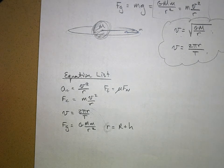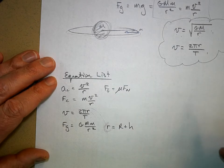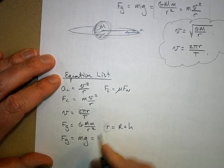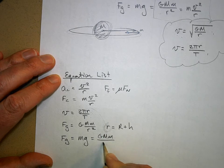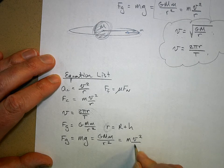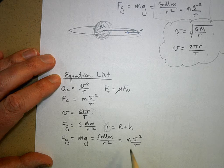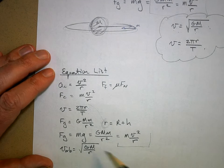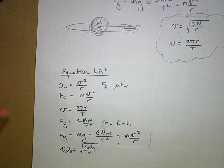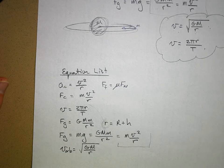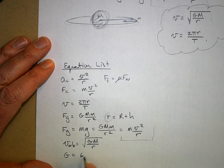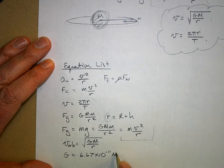For centripetal acceleration and force, r is just the radius from the center of the circle to the outside. For gravitation problems in circular orbits, that r is the same orbital radius. The full chain is: force of gravity = mg = GMm/r² = mv²/r, for circular orbits only. Also add to your list: G = 6.67 × 10⁻¹¹ N·m²/kg².